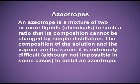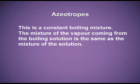There is one more type of solution known as azeotropes. Sometimes when two components are mixed, they have the same composition in both the liquid state and the vapour state. Such solutions are known as azeotropes, also called constant boiling mixtures. An azeotrope is a mixture of two or more liquids in such a ratio that its composition cannot be changed by simple distillation, because the composition of the solution and the vapour are the same.